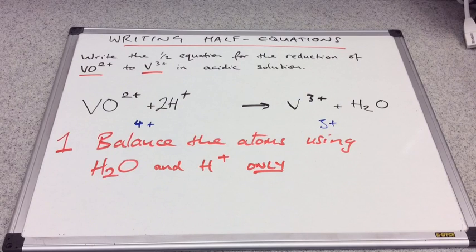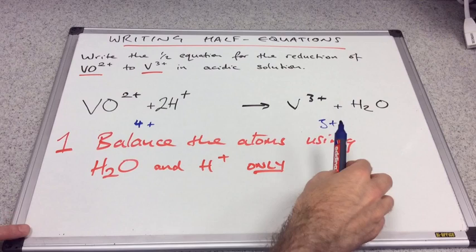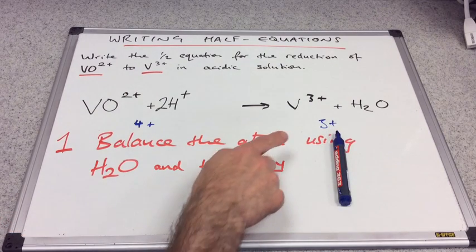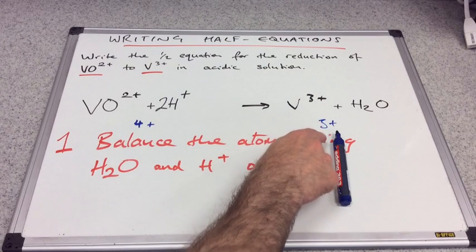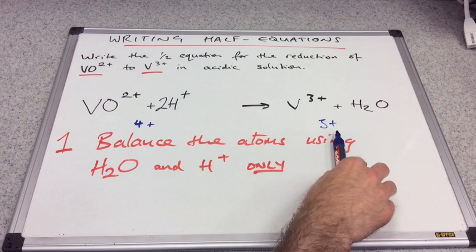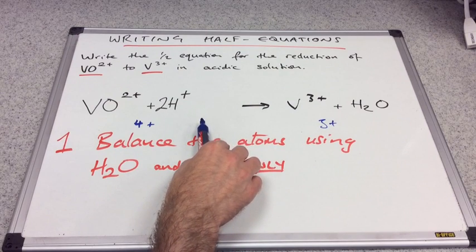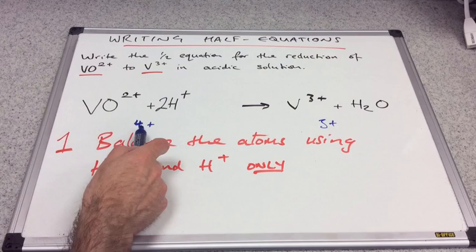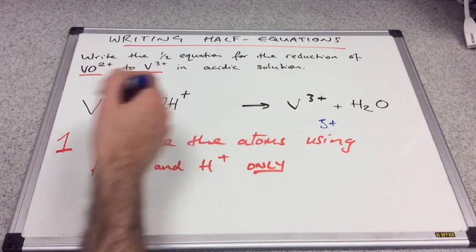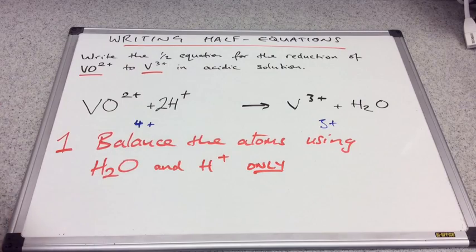The only thing that you can use to balance charge is electrons. So we now need to ask ourselves, where do the electrons need to go and how many do we need? If you think about electrons going on this side, adding anything negative to this 3 plus is just going to make this less positive, more negative. So the electrons aren't going to go on that side, they're going to go on this side. How many electrons do we need to bring 4 plus down to 3 plus so that they balance? Well, it's 1, isn't it? So we need 1 electron on the left.